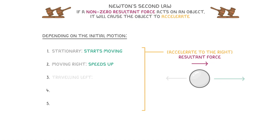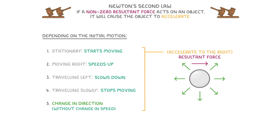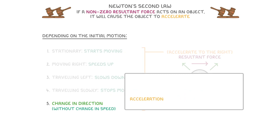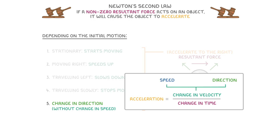However, if the object had been travelling to the left, then the rightwards acceleration would cause it to slow down, because it's acting in the opposite direction. And if the object was travelling to the left more slowly, it could cause it to stop moving entirely. The trickiest one to understand is that the acceleration could just result in a change in direction without any change in speed. This is because acceleration is defined as the change in velocity divided by the change in time, and as velocity is determined by speed and direction, any change in the direction of the object also changes the velocity, and so is considered acceleration.